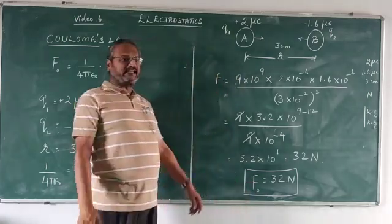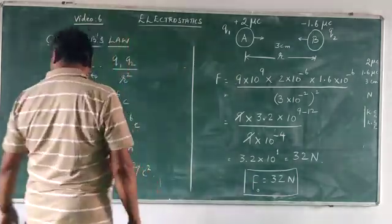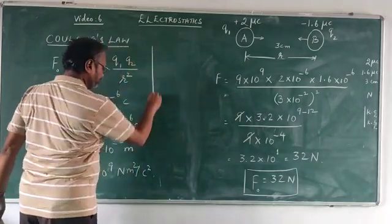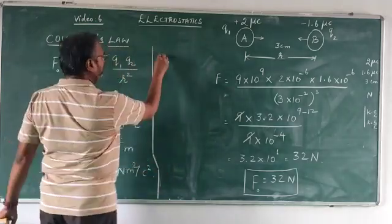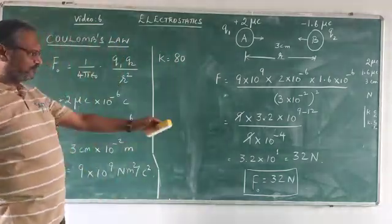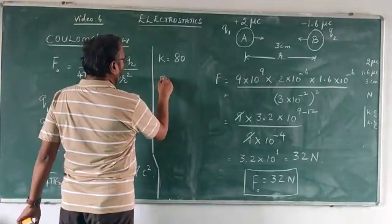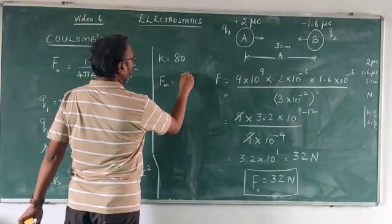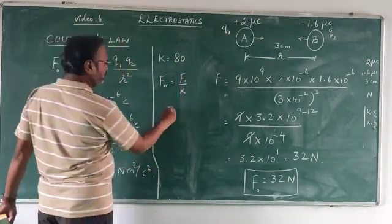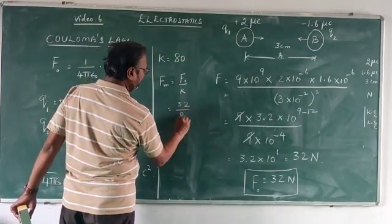Suppose if I place these two charges in water, what is the dielectric constant of water? The dielectric constant of water is, we can say, 80. It is actually 81, but for problem sake we will take it as 80. We know that the force in a medium is equal to force in air divided by the dielectric constant, which is equal to force in air 32 divided by 80.